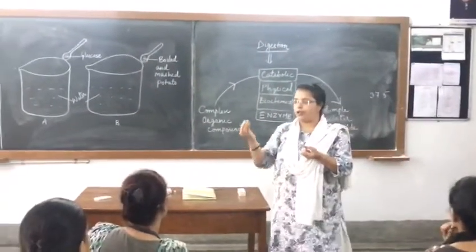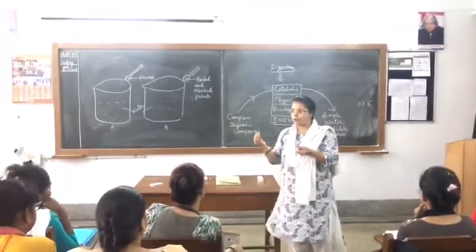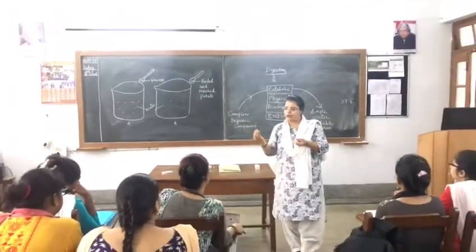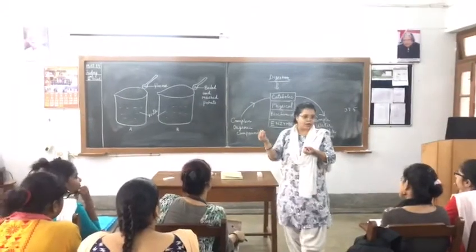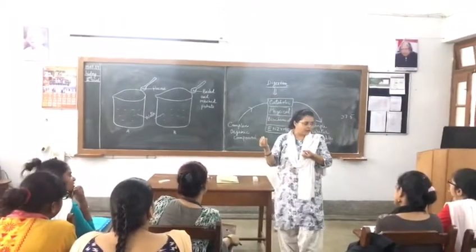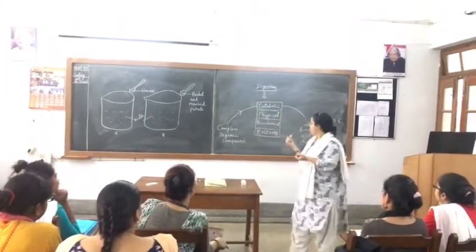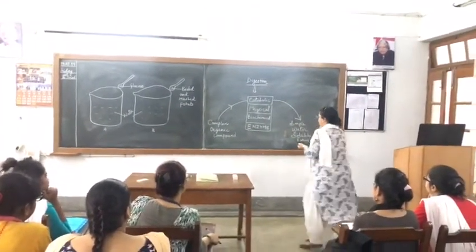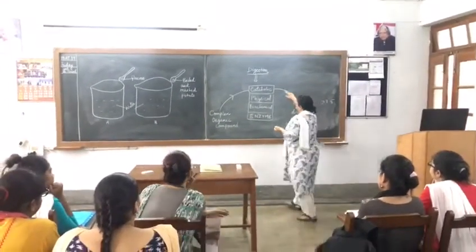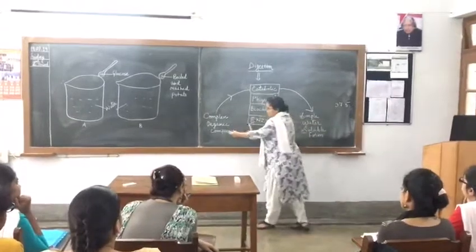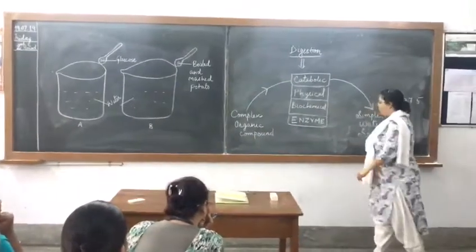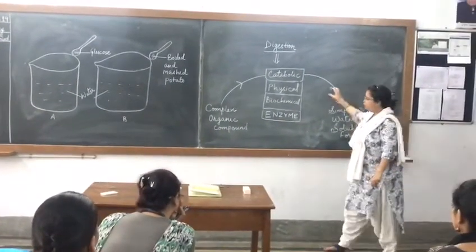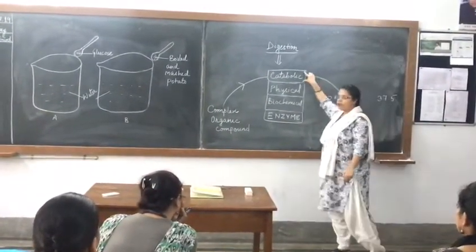Catabolic process: glucose, a large molecule, breaks into carbon dioxide, water vapor, and energy. So, in digestion as well, a large molecule is converted into small water-soluble molecules. So, digestion — which process can it be classified as? The digestion is a catabolic process.